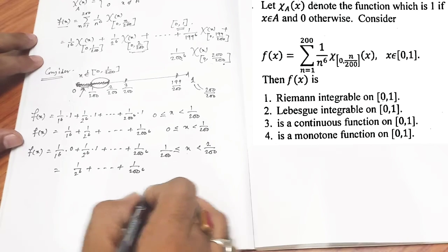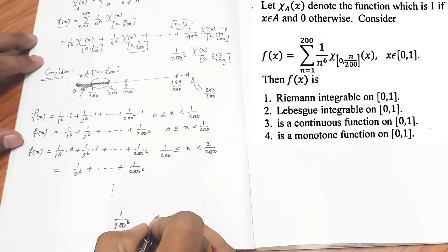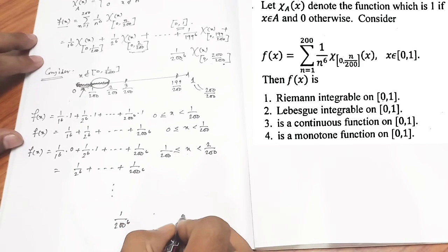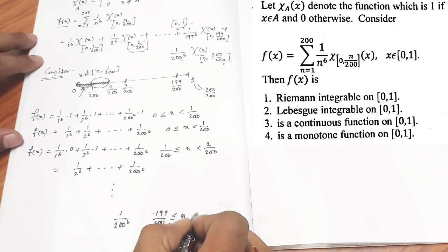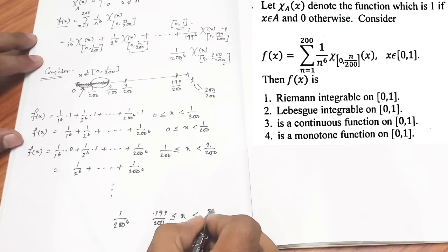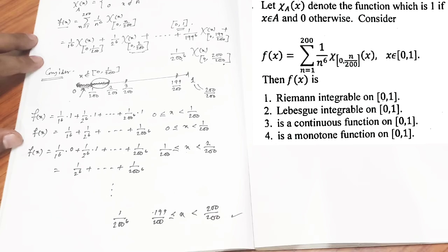Similarly, if you proceed further, then at the very last step you will have 1 by 200 to the power 6, when your x lies between 199/200 and 200/200, which is 1.